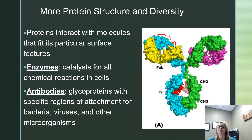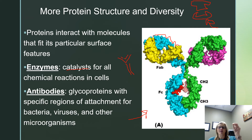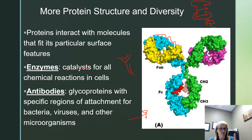This is where structure determines function. Enzymes have a particular shape — they provide a place for a chemical reaction to occur. They are what we call a catalyst, which speeds up a reaction without being used up. An antibody is an example of a protein — it has a classic Y shape and these are glycoproteins. They have specific regions that match structures for attachment for bacteria, viruses, and other microorganisms. Our body is unique in having all these different antibodies that can protect us.